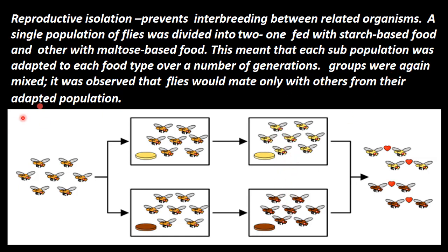The groups were again mixed. The result was that it was observed that flies would mate only with others from their own adapted population. Within the mixed group, flies from one sub-population would not mate with those from the other sub-population.